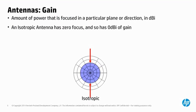Please understand that an antenna does not actually add power to an AP's RF transmitter. It simply accepts the energy generated by the transmitter and focuses more of it in a particular direction. The more focus, the more gain.